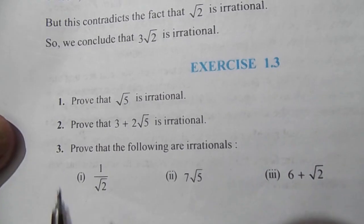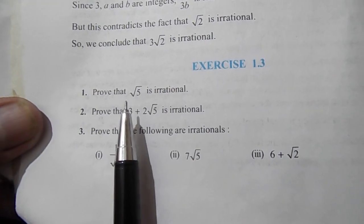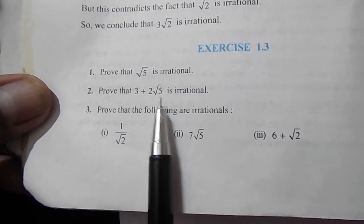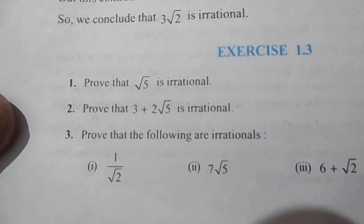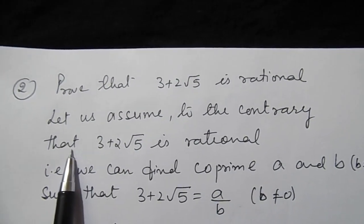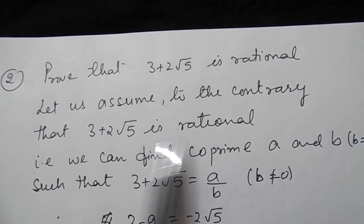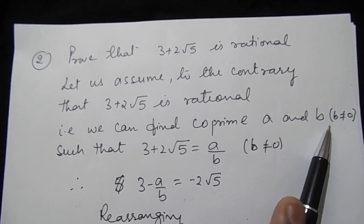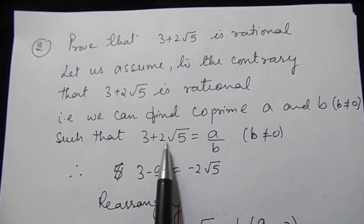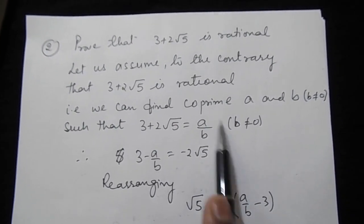Moving on to question 2: prove that 3 + 2√5 is irrational. In question 1 it was only √5; here it is 3 + 2√5. To prove this, let us assume to the contrary that 3 + 2√5 is rational. That means we can find co-prime integers a and b such that 3 + 2√5 = a/b, where b ≠ 0.